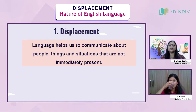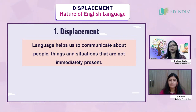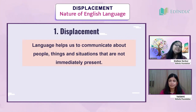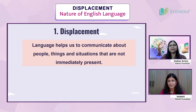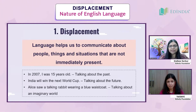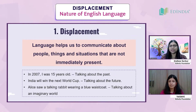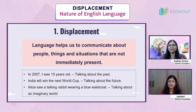We can talk about situations and events that are not present with us — things not in front of us right now. For example, if my mother is not present in Jaipur, I can still talk about her. I can talk about colleges in Dehradun even if they are not here. We call this 'displacement' in technical terms — discussing past events, future events, imagined things, fiction, and fairy tale characters. This is an important property of language called displacement.